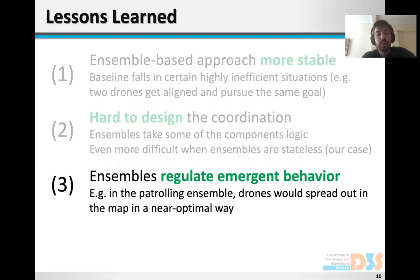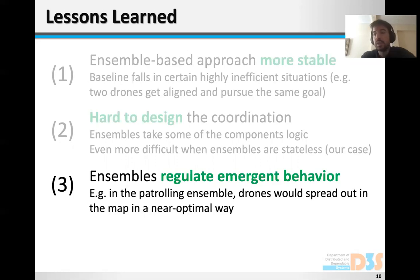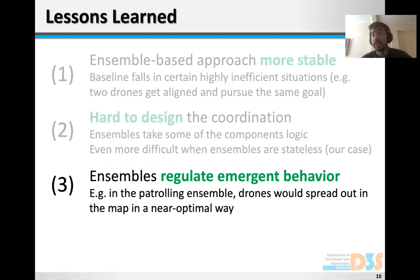The third point is that ensembles seem to regulate some emergent behavior in the system. For example, in the patrolling ensembles, the drones — even though they were not specifically told to do so — were spread out in the area of the map in a near-optimal way, which was a nice effect to see.